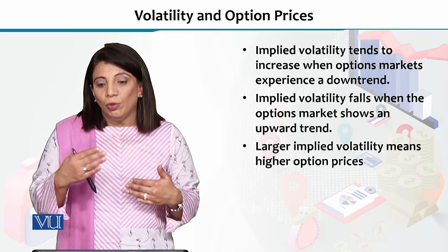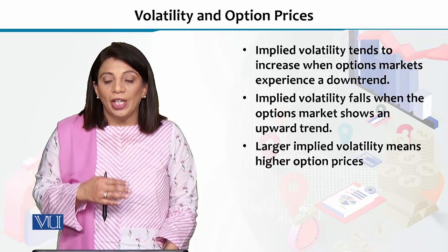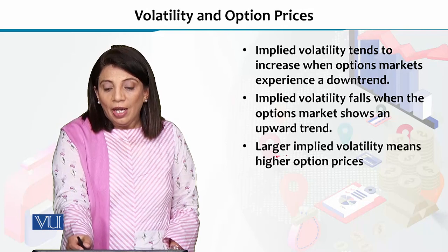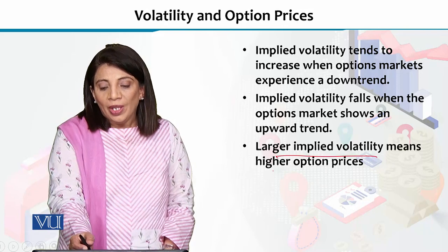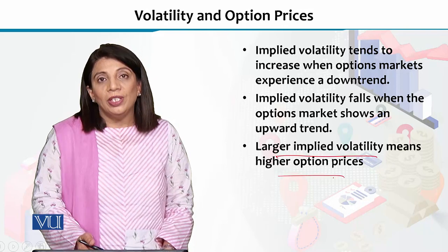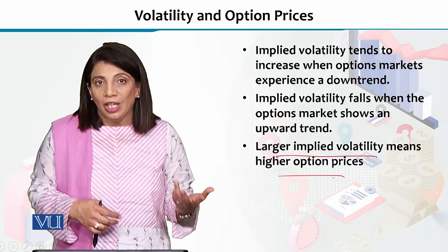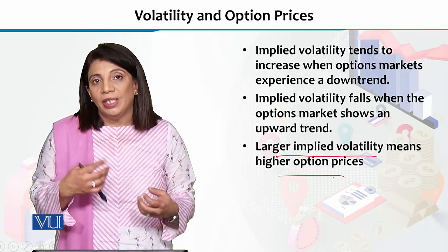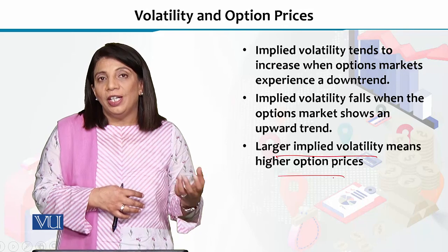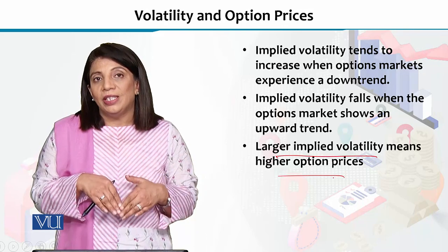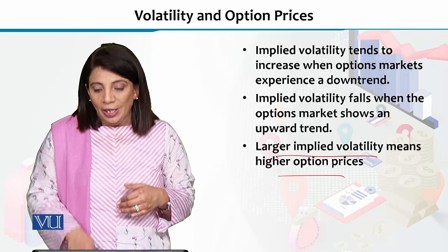These are the two types of patterns which we observe in the options market. Larger implied volatility ka matlab ye hai ke option ki kiemtein zyada hongi. So, larger volatility means higher prices, lower volatility means that the prices of the options will also be lower.